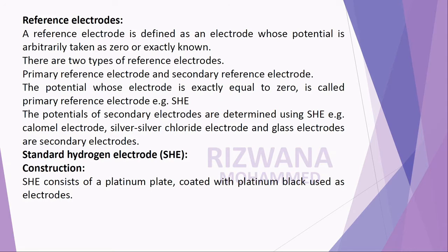What is the meaning of reference electrode? A reference electrode is defined as an electrode whose potential is arbitrarily taken as zero or exactly known. That is known as a reference electrode.